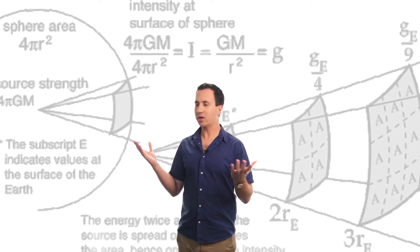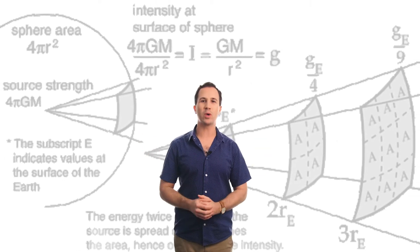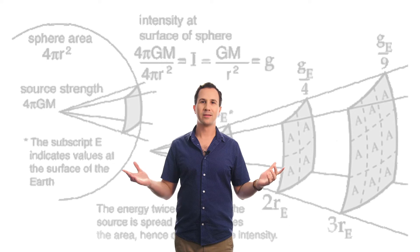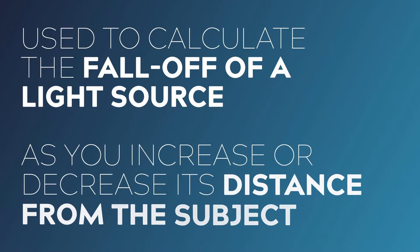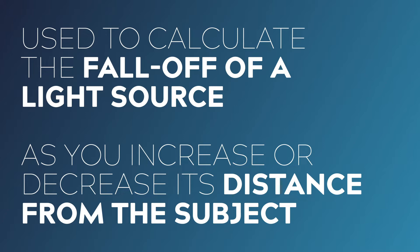When you Google the inverse square law, this is what you're generally hit with — math. Lots of math. So instead I want to do my best to keep things as simple and as practical as I possibly can. The inverse square law is used to calculate the fall-off of a light source as you increase or decrease its distance away from your subject.